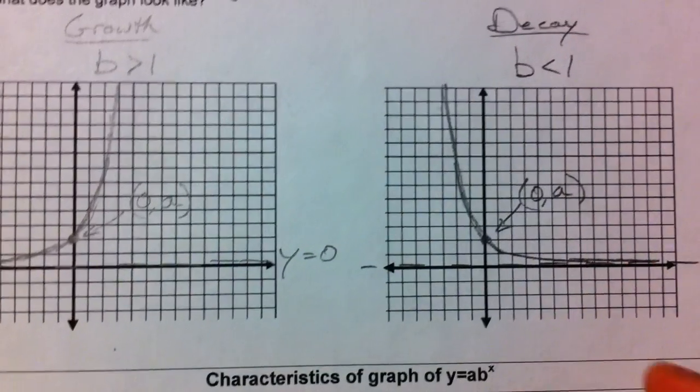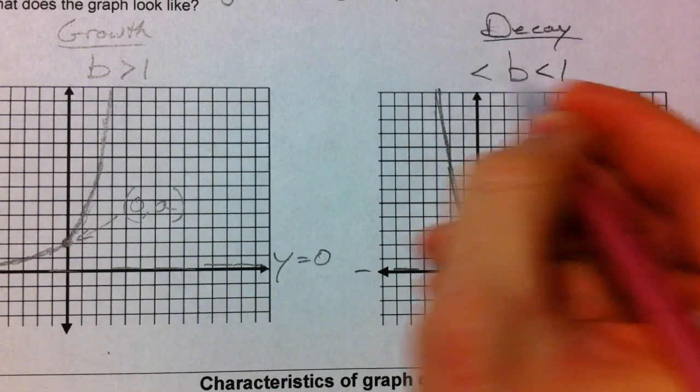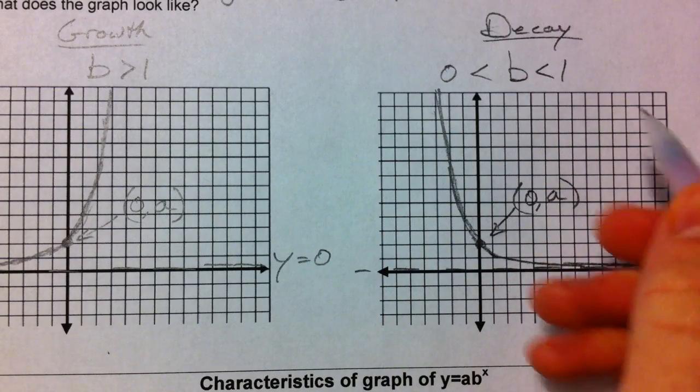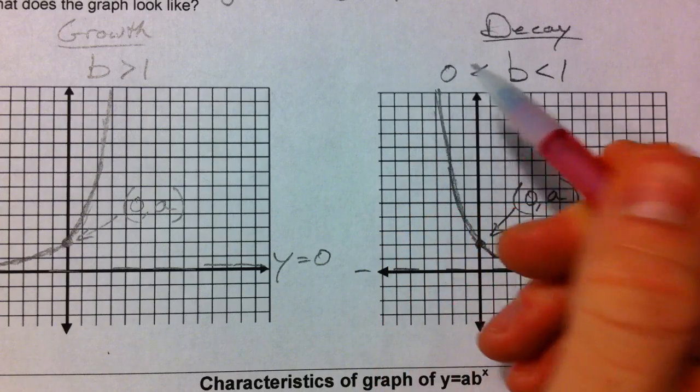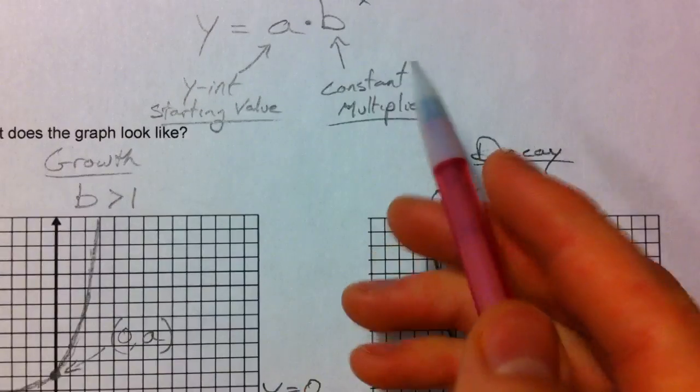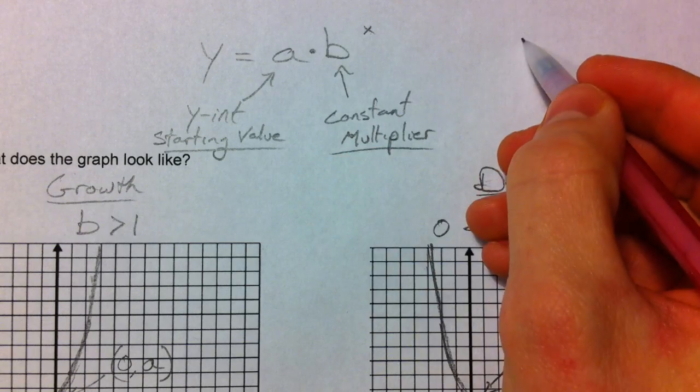Now, we're going to put another disclaimer on here that b actually has to be in between 1 and 0. Because if b is negative, weird things happen. Because if you have a negative, say a negative 2 in here, and you square it, negative 2 squared is positive 4.